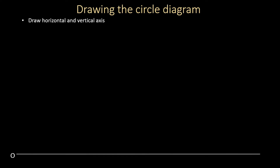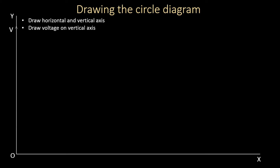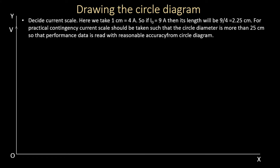We start by drawing horizontal and vertical axes with voltage on the vertical axis. For the current scale, 1 centimeter equals 4 amperes. Since no-load current is 9 amperes, the length will be 9 divided by 4, which is 2.25 centimeters. The current scale should be chosen such that the circle drawn has a diameter greater than 25 centimeters, so performance data can be read with reasonable accuracy.